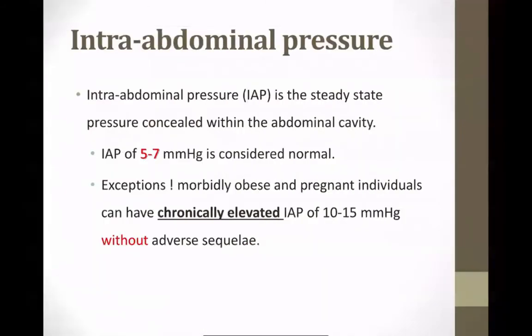What is intra-abdominal pressure? The intra-abdominal pressure is basically the pressure within the abdominal cavity. The normal range is 5 to 7. However, that can be higher in patients with morbid obesity and in pregnant females without any clinical consequences.